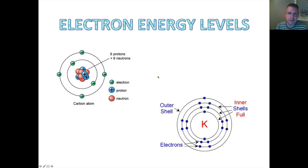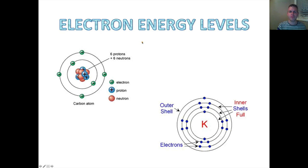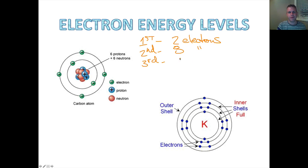We looked at the atomic models in class, and when we got up to Bohr's model of the atom, he was the first person to say that electrons are organized in energy levels — or shells, as he called them. These are always organized in the same fashion: the first shell always contains two electrons, the second shell always contains eight electrons, the third shell also contains eight electrons, and the fourth shell contains eight electrons. It's always two, eight, eight, eight. We're not going to go beyond that in Science 10.